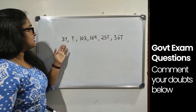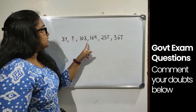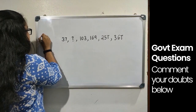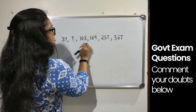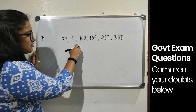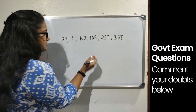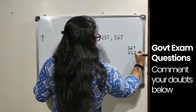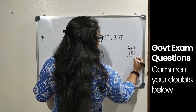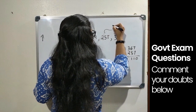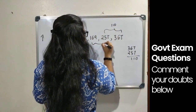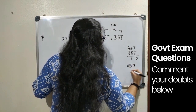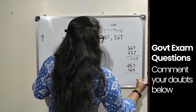The first question has the series: 37, [missing], 103, 169, 257, 367. The series is in increasing form and the difference is not very large. Let's find the differences: 367 minus 257 equals 110, and 257 minus 169 equals 88.